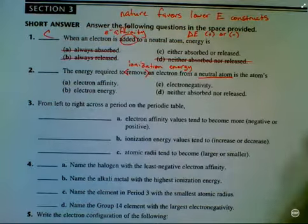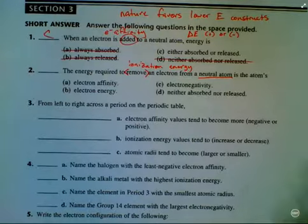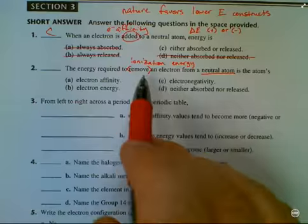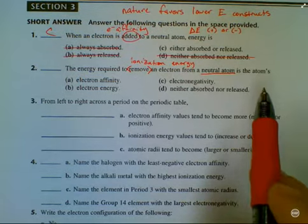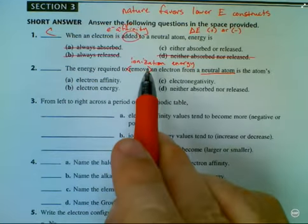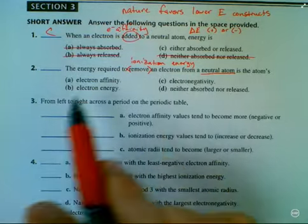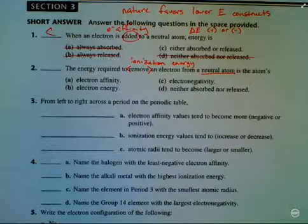The energy required to remove an electron from a neutral atom is the atom's... But wait a minute. I don't see ionization energy in any of these options here. So what do I put? Well, it must not be wanting me to just identify ionization energy, but the question must be wanting me to apply the definition. So, the energy required to remove an electron from a neutral atom is the atom's...